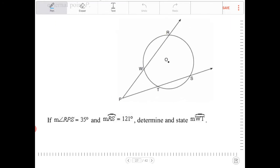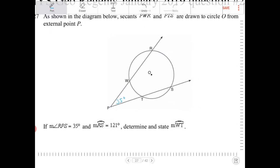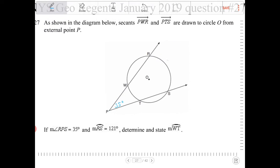RPS measures 35 degrees. Arc RS measures 121, so this is 121 degrees. Determine and state arc WT.